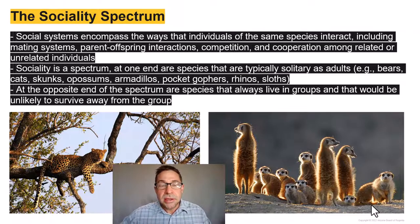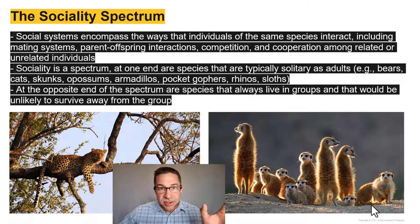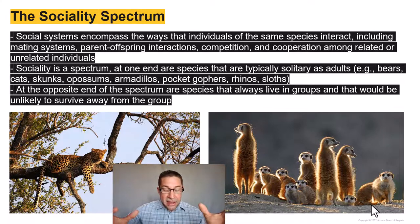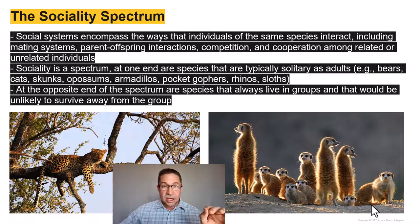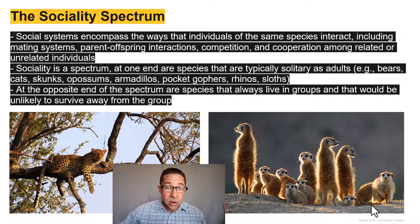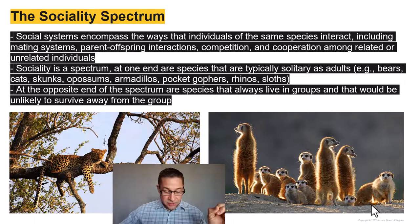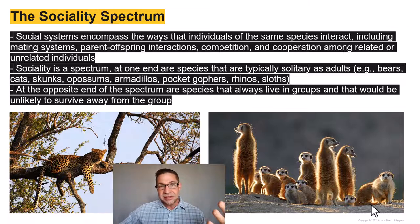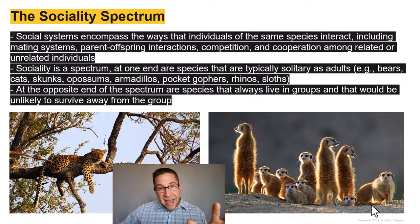Social systems encompass an array of interactions between members of the same species, including mating systems and parent-offspring interactions, which we'll cover next week, as well as competition and cooperation between related or unrelated individuals, which we'll explore in module six. So the big idea right off the bat: sociality is not binary, meaning species are not simply either social or asocial.